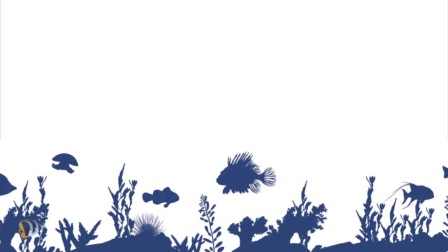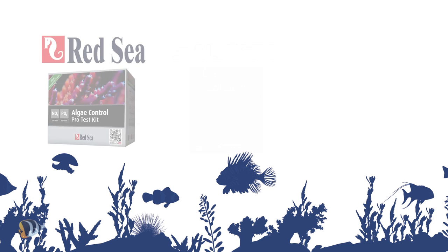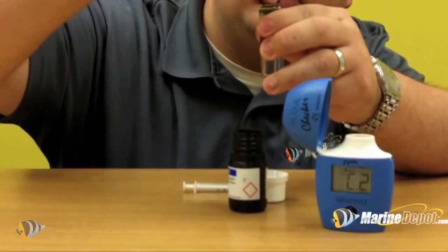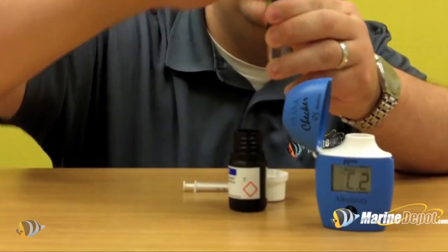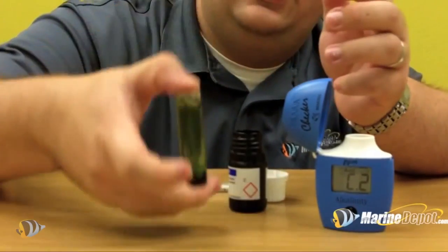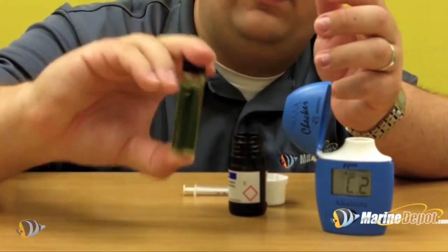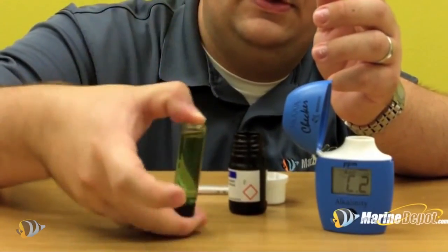Getting accurate test results is important when caring for a reef aquarium. Red Sea, Salifert, and Elos are widely considered the most accurate and easy-to-use liquid test kits by reef keepers. Hanna colorimeters are another option and a great alternative for hobbyists that find color recognition-type test kits difficult to interpret.